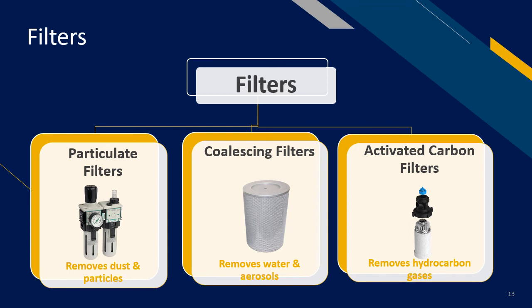Now on to filters. The types of filters available to ensure good air quality are divided into three types. Particulate filters are mainly used to remove dust and particles. Coalescing filters function to remove water and aerosols — small droplets are trapped in the filter media and form larger droplets which are then removed. And lastly, activated carbon filters remove hydrocarbon gases from the air. These filters are commonly used in the F&B industry.